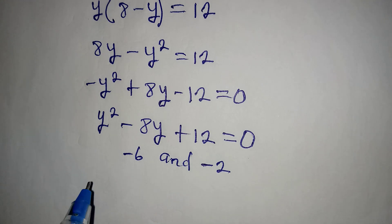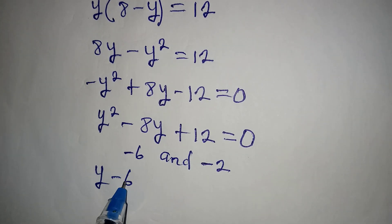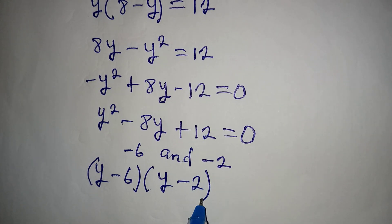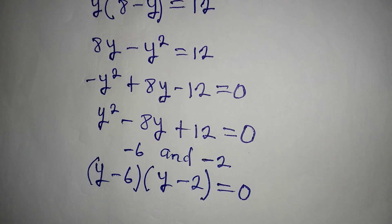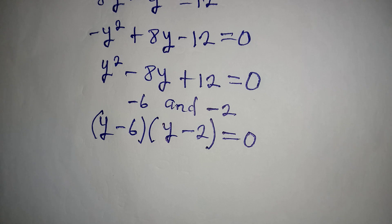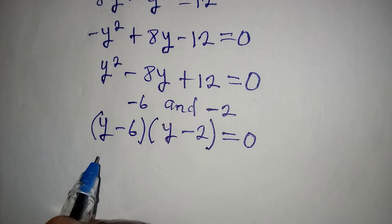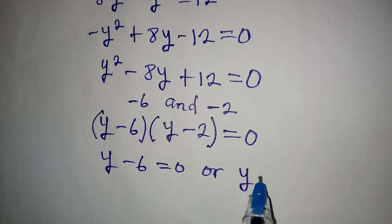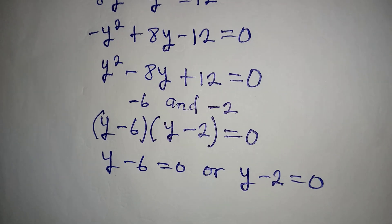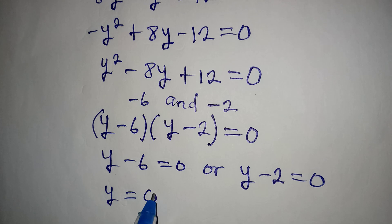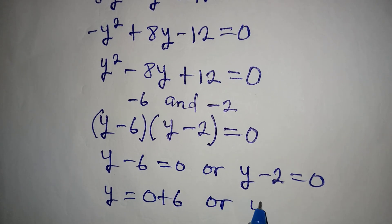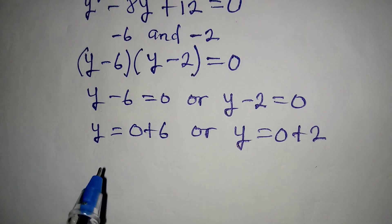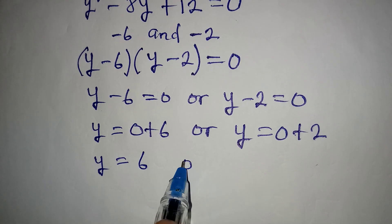So we write the factors as (y minus 6) and (y minus 2) equal to 0. Using the zero product rule, we get y minus 6 equals 0 or y minus 2 equals 0, which gives y equal to 6 or y equal to 2.